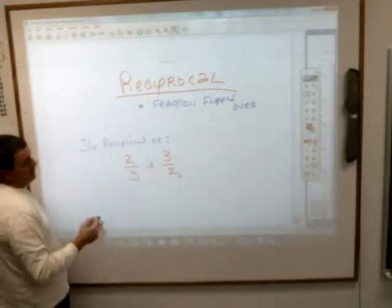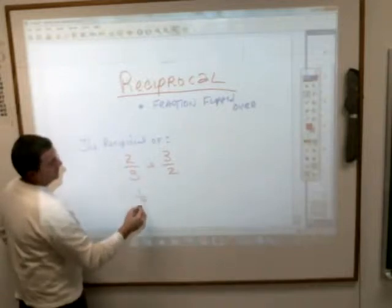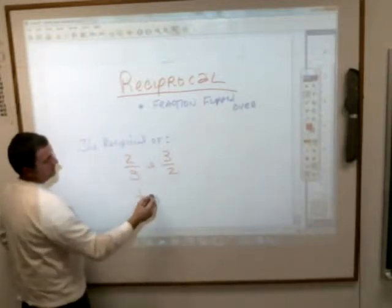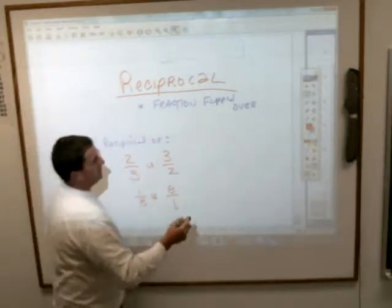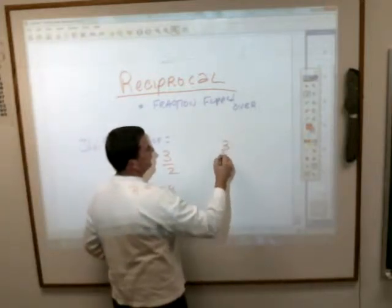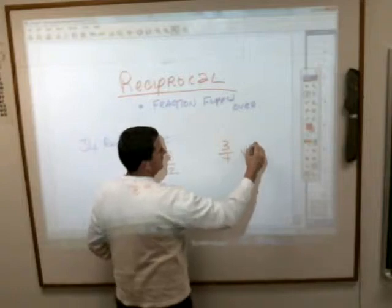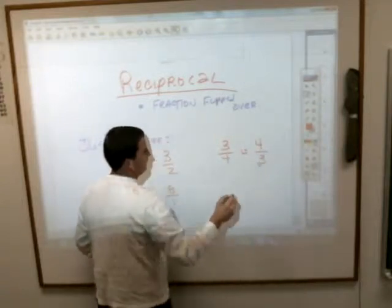There's nothing easier than reciprocals. The reciprocal of one-eighth is eight over one. The reciprocal of three-fourths is four-thirds.